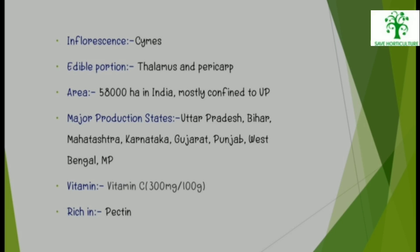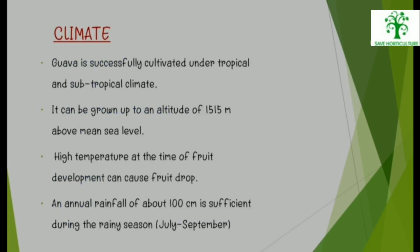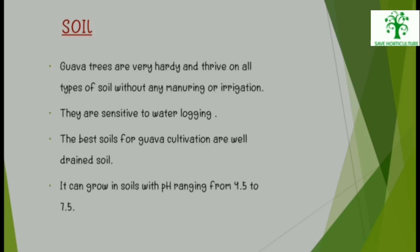Guava is successfully cultivated under tropical and subtropical climate. It can be grown up to an altitude of 1,515 meters above mean sea level. High temperature at the time of fruit development can cause fruit drop. An annual rainfall of about 100 cm is sufficient during the rainy season. Guava trees are very hardy and thrive on all types of soil. The best soils are well-drained, and it can grow in soils with pH ranging from 4.5 to 7.5.